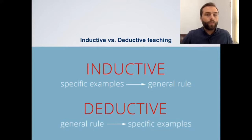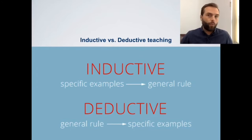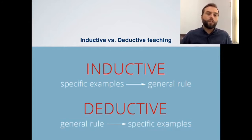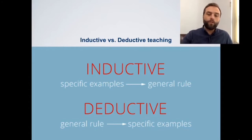How you deal with the examples and the rules can change. You can have students finding the rules, discovering the rules through different kinds of activities. These approaches can change for different types of learners — teaching inductively for young learners and for adults is going to be different, but they share the same basic structure: examples to rule for inductive, and rule to examples for deductive. In this video, we're going to look at some examples, advantages and disadvantages, and a few other tips as well.